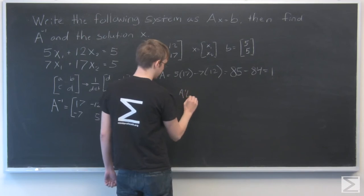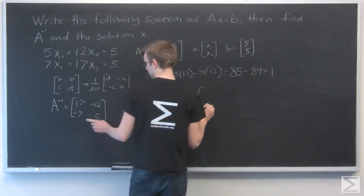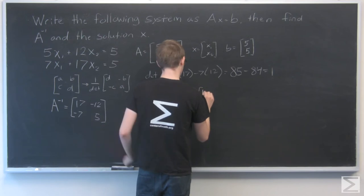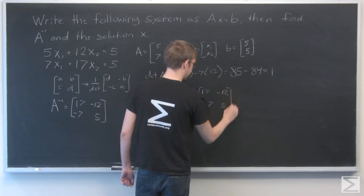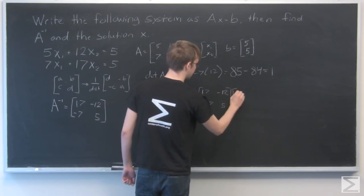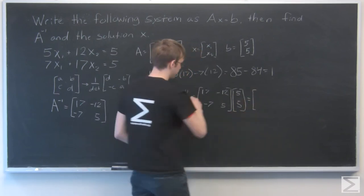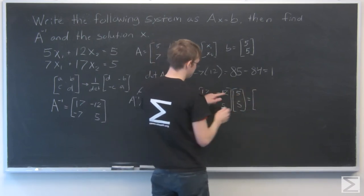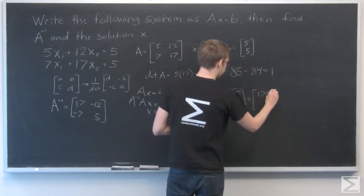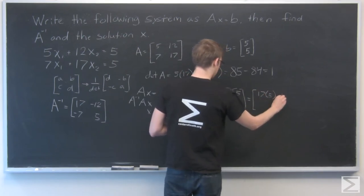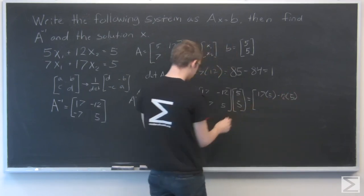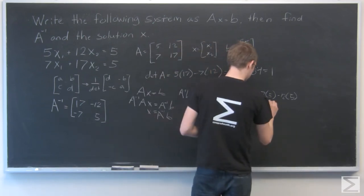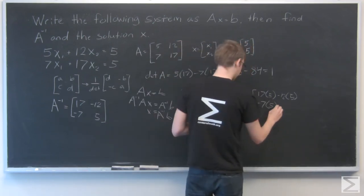So A inverse B. We have our A inverse: 17, minus 12, minus 7, 5. And B is 5, 5. So our result is a 2 by 2 matrix. Multiply row and column. 17 times 5 minus 12 times 5, and minus 7 times 5 plus 5 times 5.